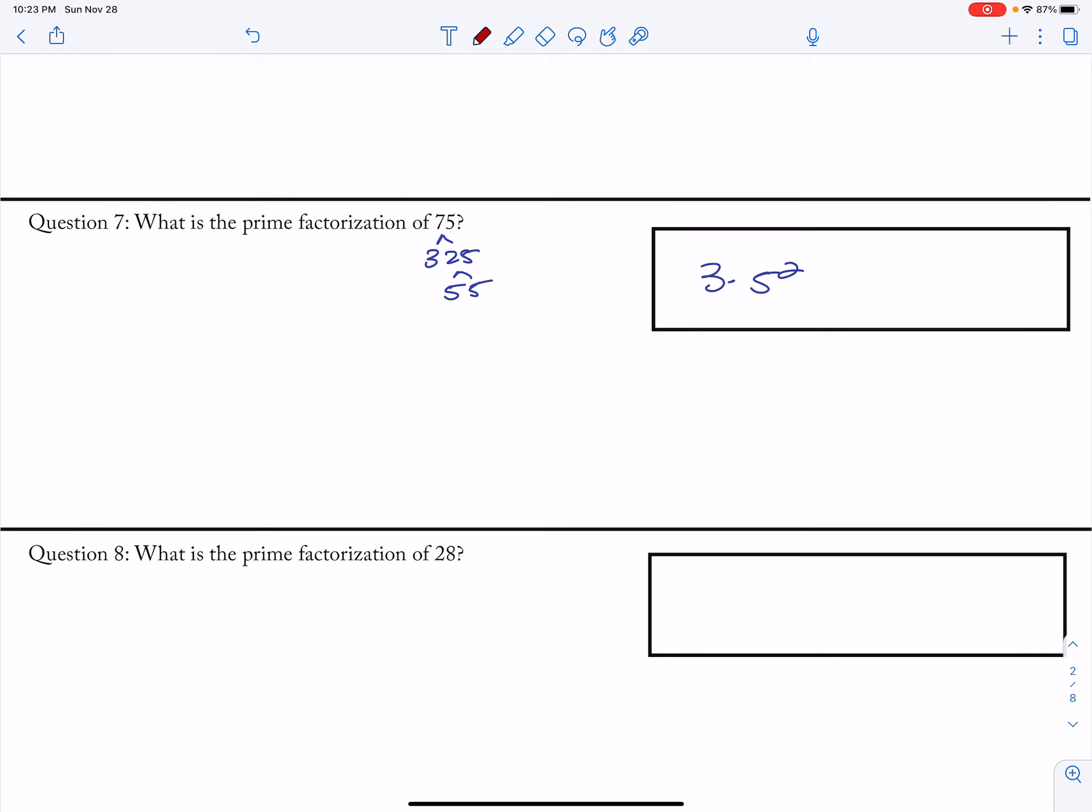And then if I change this one to square root, and I'm taking the square root of this, this is the square root of 3 times the square root of 5 squared. So this is 5 root 3.